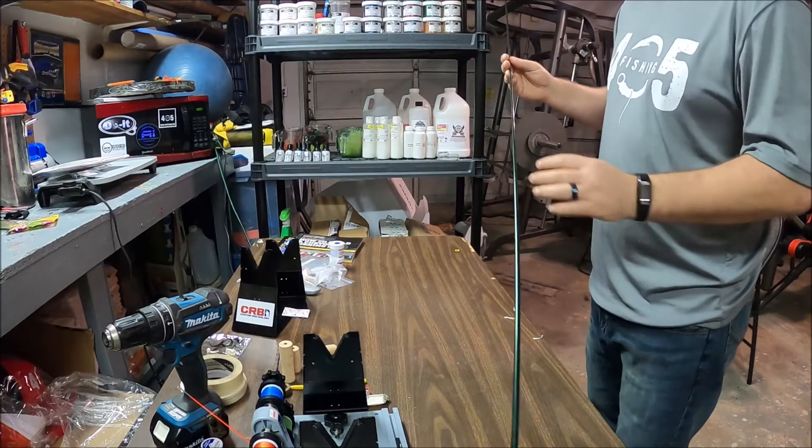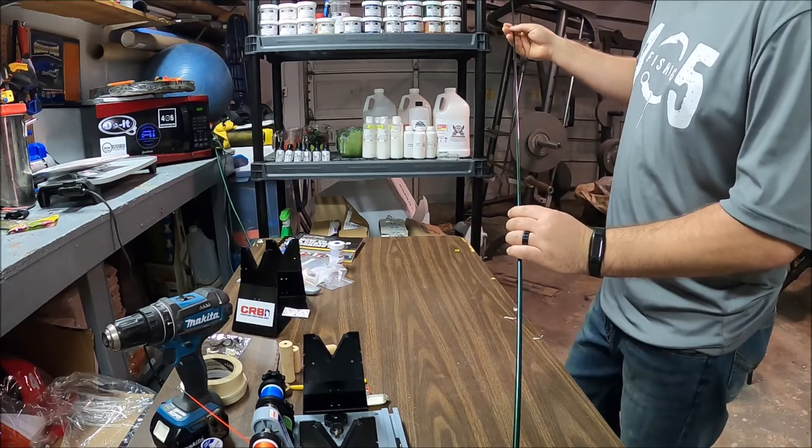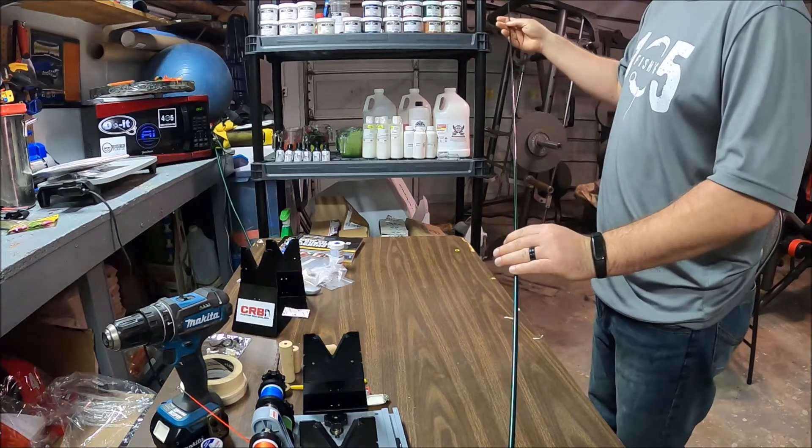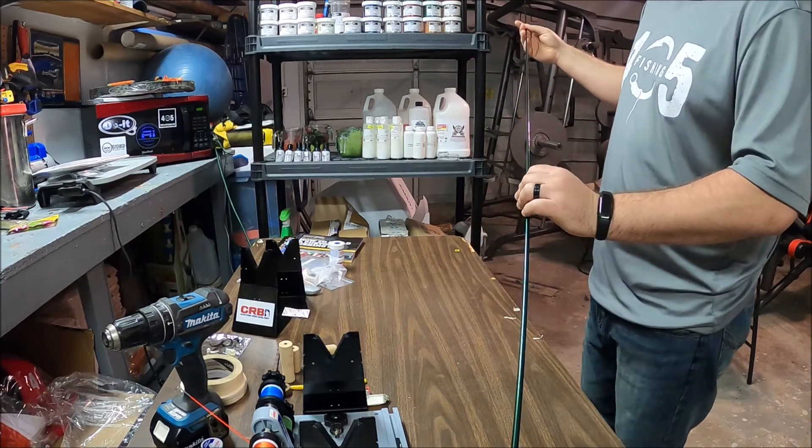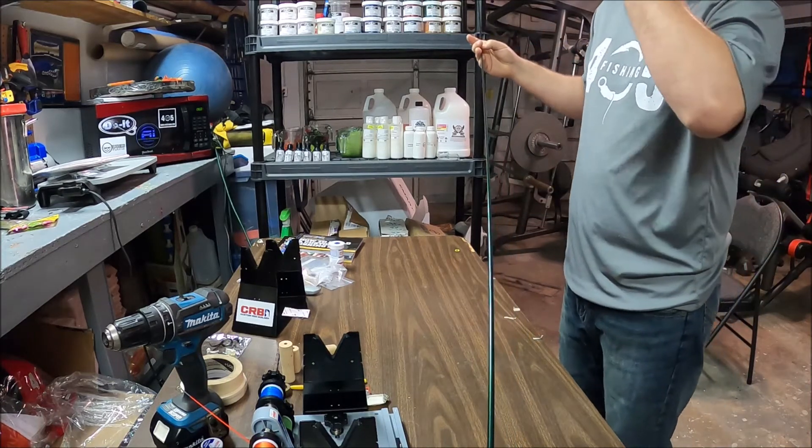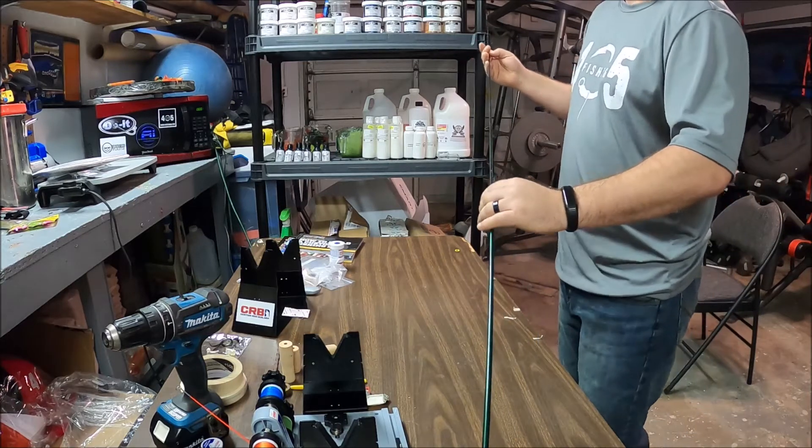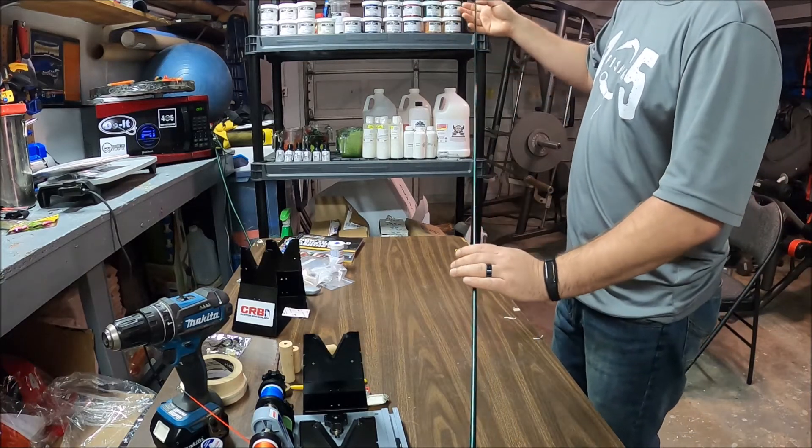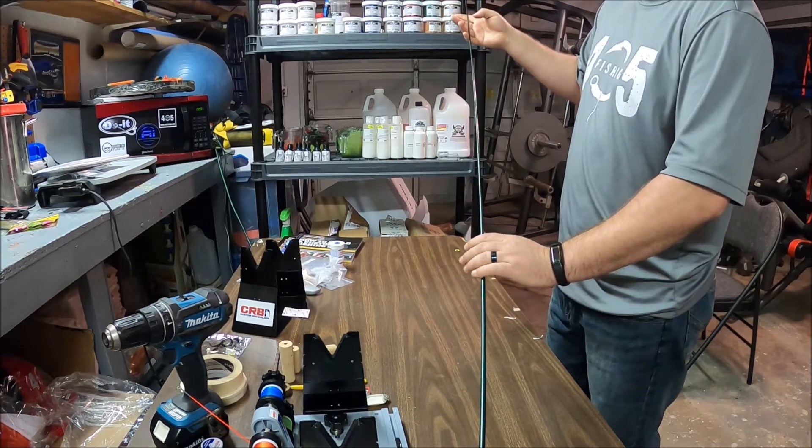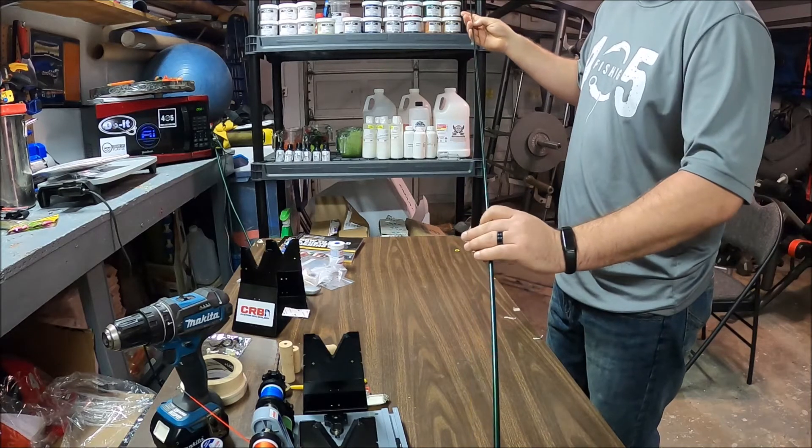Alright. So the first thing we're going to do is we're going to find the backbone of the rod blank. This is an MHX ultralight rod blank, 6'6". We're going on a crappie fishing trip. So I'm building this rod to take crappie fishing. To find the backbone, you just want to hold it, kind of flex it somewhere in the middle where the backbone is, and then just roll it. And where it stops, that's the backbone.